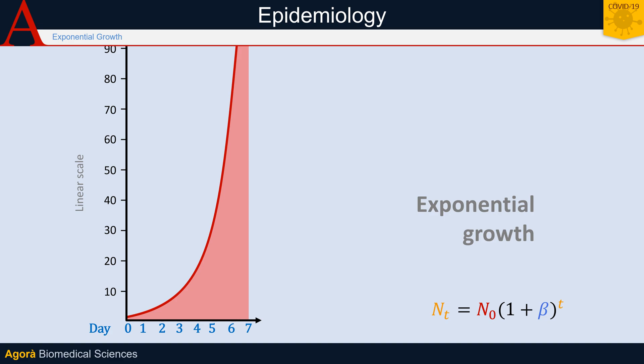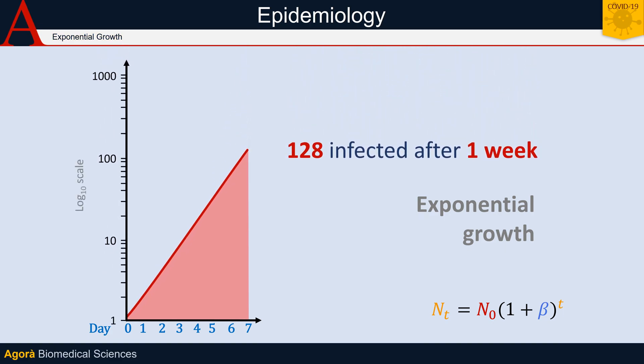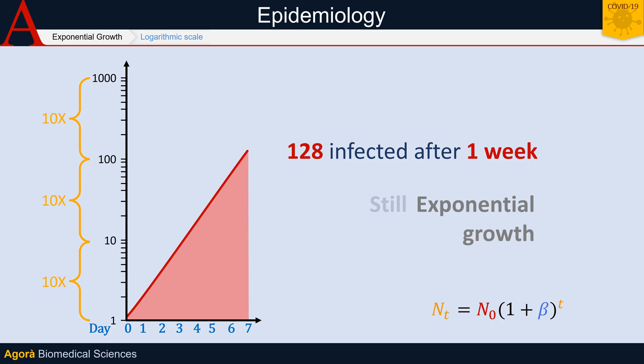Which is why the evolution of an epidemic is often represented on a logarithmic scale. The logarithmic scale is a non-linear scale that shows large variations of a variable in a compact way. The scale shrinks as the variable grows — the intervals become progressively larger, and what remains constant is the ratio. Keep in mind that the logarithmic scale only changes the representation of the data, but not its value.